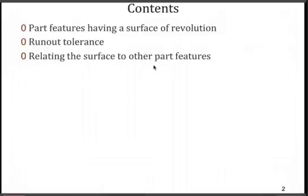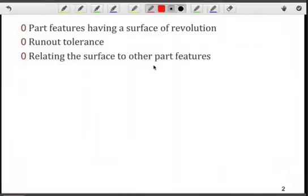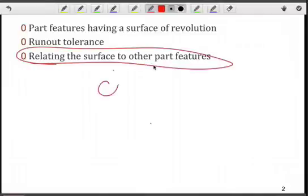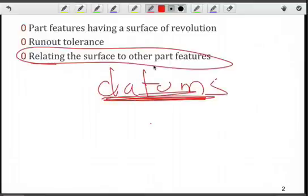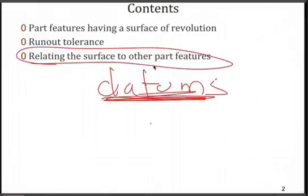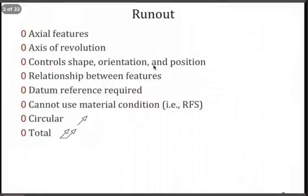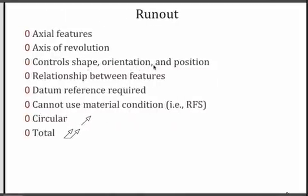And really, we're doing something similar to profile tolerance in that we are relating the surface to other part features. Whenever we are doing this, you should always think of datums and what would be an appropriate datum in this context. A runout was defined to deal with axial features.